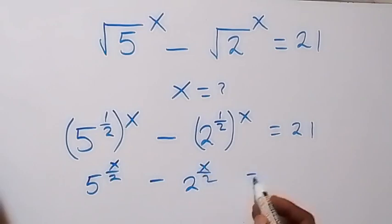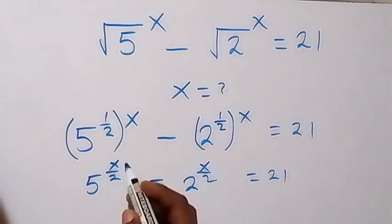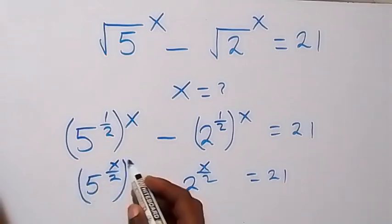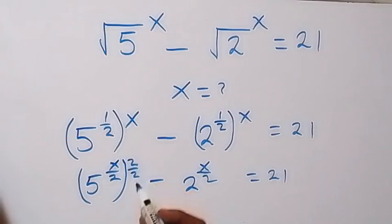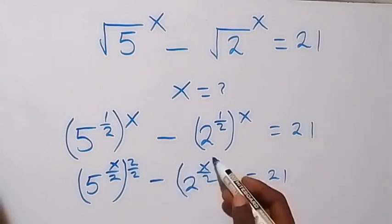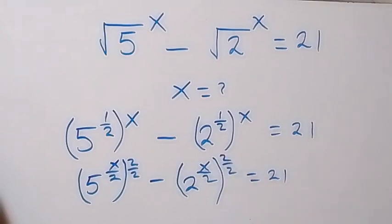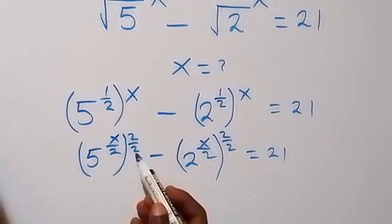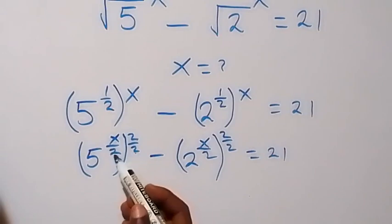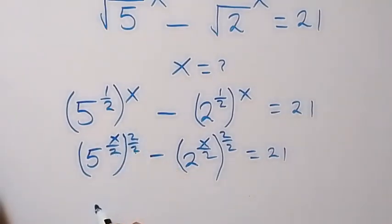Equals to 21. And from here when we raise this to power 2 over 2 — which is the same thing as before because 2 over 2 is 1 — let's put this as raised to power 2 over 2, equals to 21. From here when we apply the law of indices and take these two inside, since you multiply, we leave this outside. So this will be 5 raised to power x over 4.